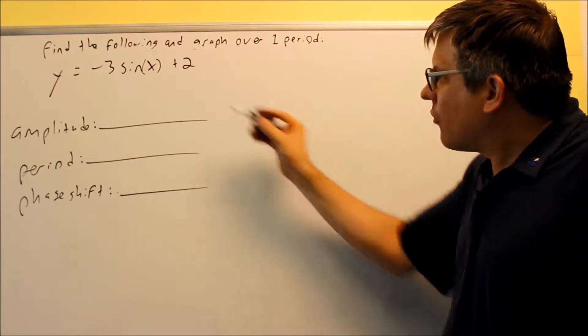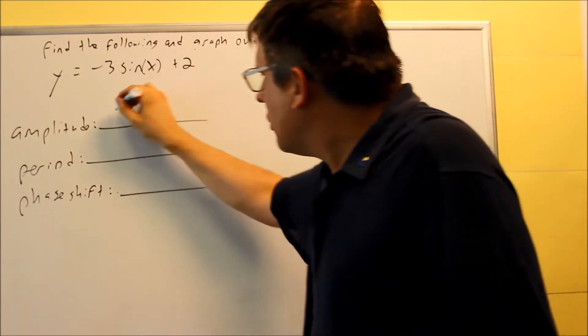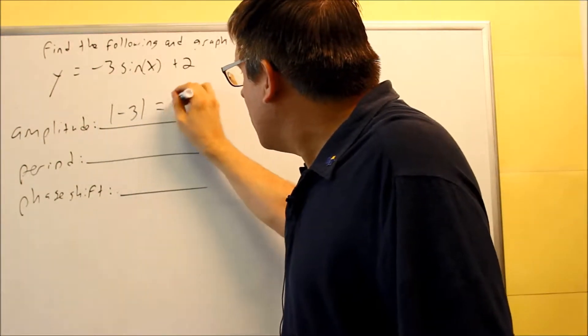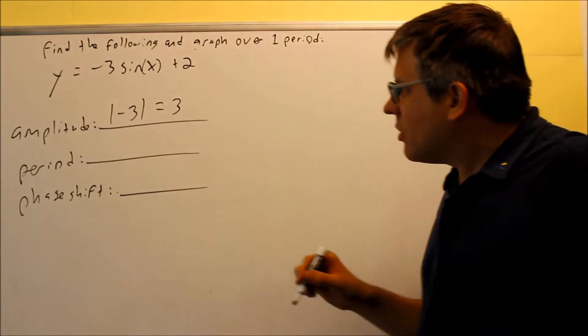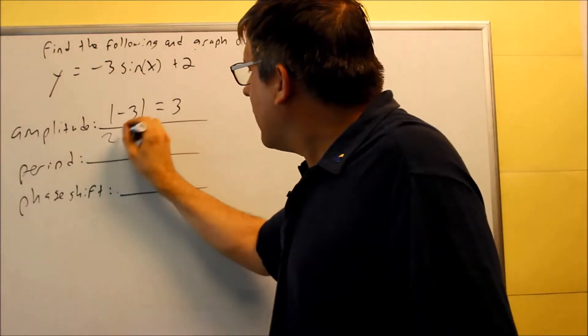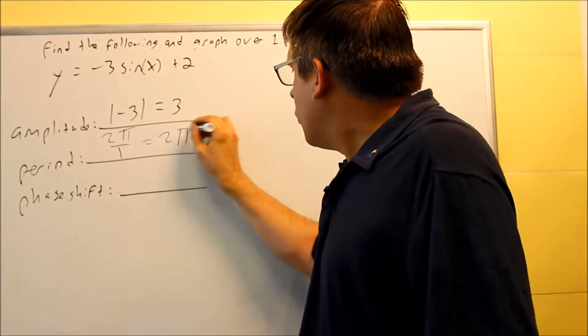First, my amplitude is the absolute value of negative 3, which is 3. My period is 2π divided by the number in front of the x, so 2π over 1 equals 2π.